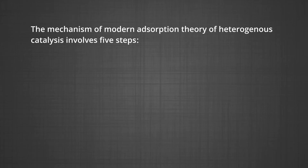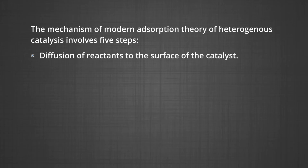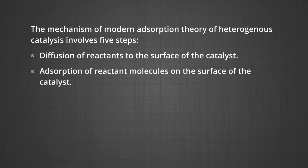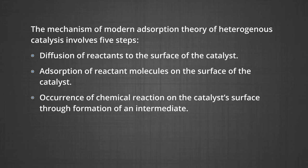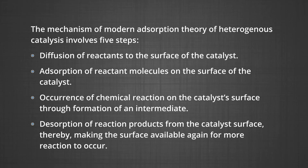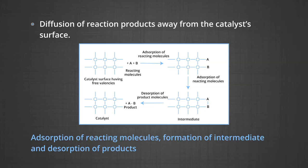The catalytic activity is localized on the surface of the catalyst. The mechanism involves five steps. Number one, diffusion of reactants to the surface of the catalyst. Number two, adsorption of reactant molecules on the surface of the catalyst. Number three, occurrence of chemical reaction on the catalyst surface through formation of an intermediate. Number four, desorption of reaction products from the catalyst surface, thereby making the surface available again for more reaction to occur. Number five, diffusion of reaction products away from the catalyst surface. These steps are well illustrated in the diagram.